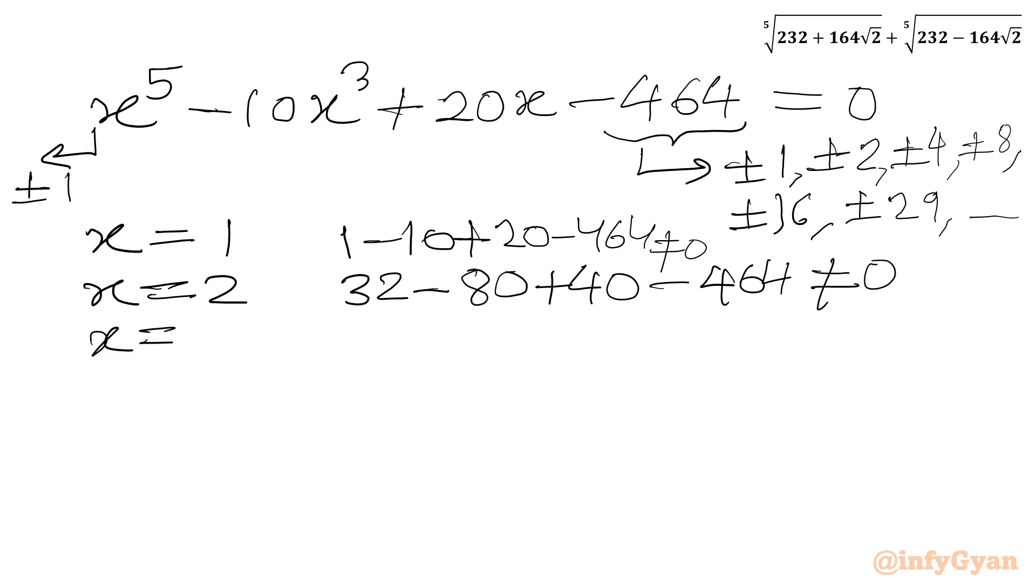Now I will consider X equal to 4. 4 to the power 5 is 1024, minus 10 times 64 is 640, plus 20 times 4 is 80, minus 464. This equals 0. Yes, this time it is satisfied. So X equal to 4 is our base solution for our quintic equation.